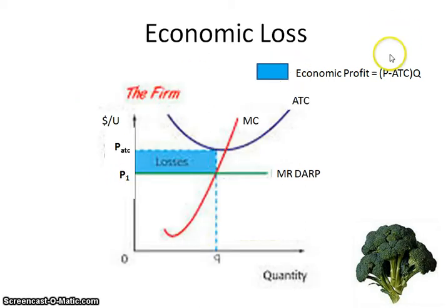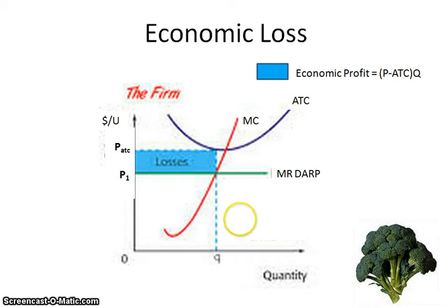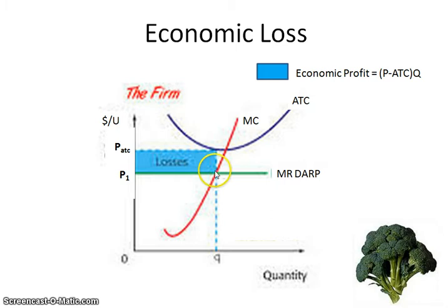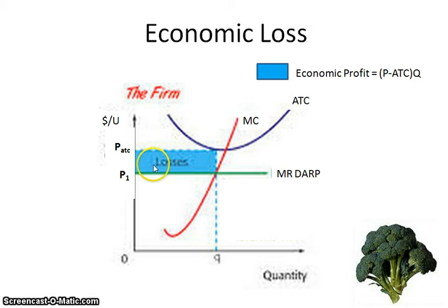Sometimes there's an economic loss. We still use our economic profit formula of price minus ATC times quantity. But in this case, at the equilibrium quantity where MR equals MC, when we draw that line down to the quantity, what we see is that it never hits the ATC curve because ATC is greater than the price. So the per unit economic loss is ATC minus the price. To figure out the total economic loss, you take ATC minus the price times the quantity, and this gives you the total economic loss that the firm is incurring.